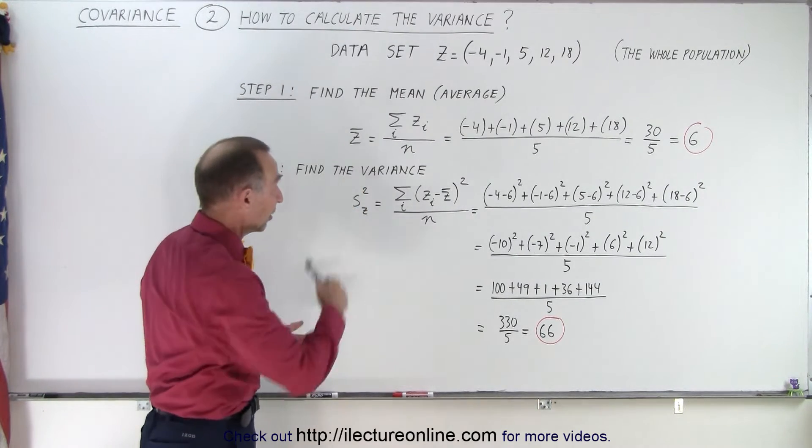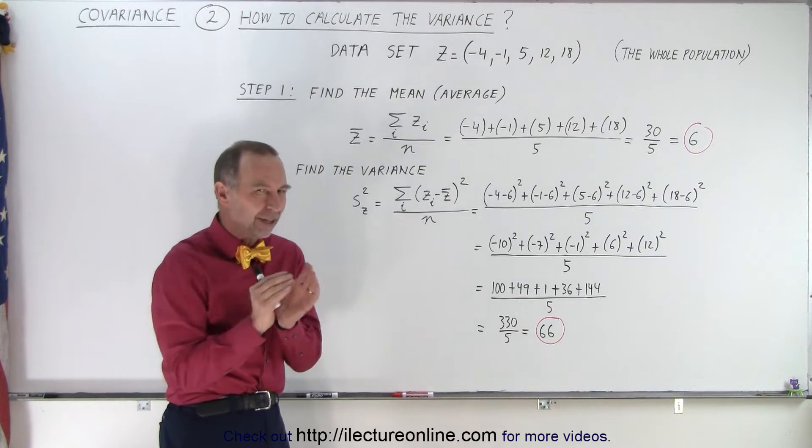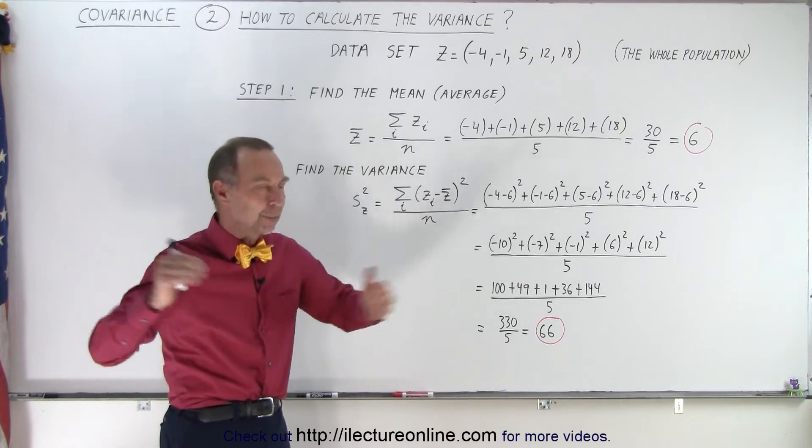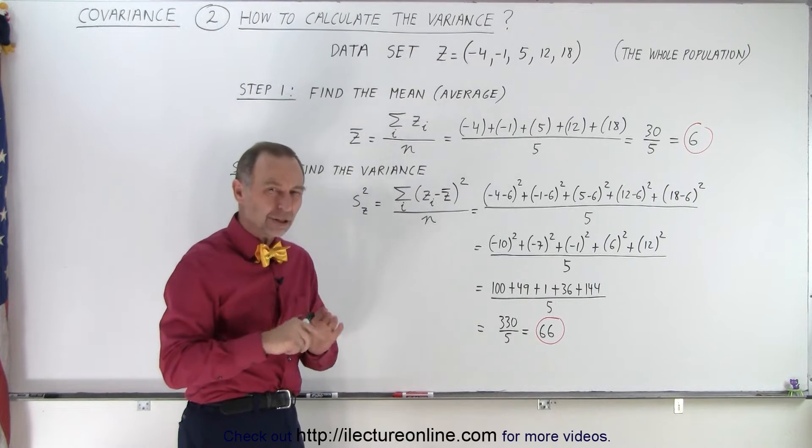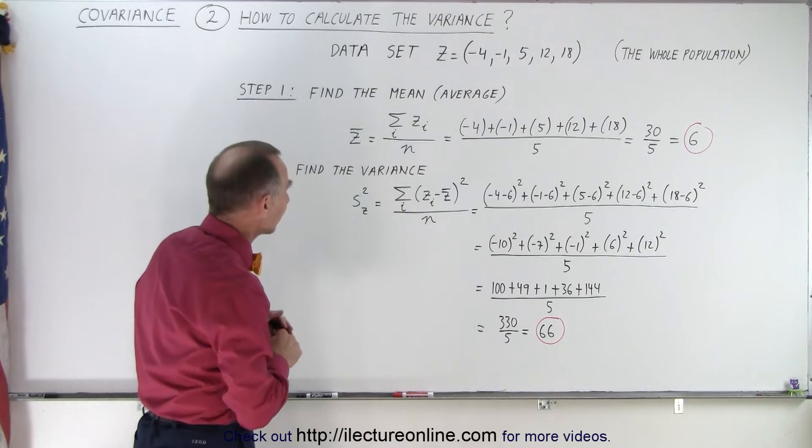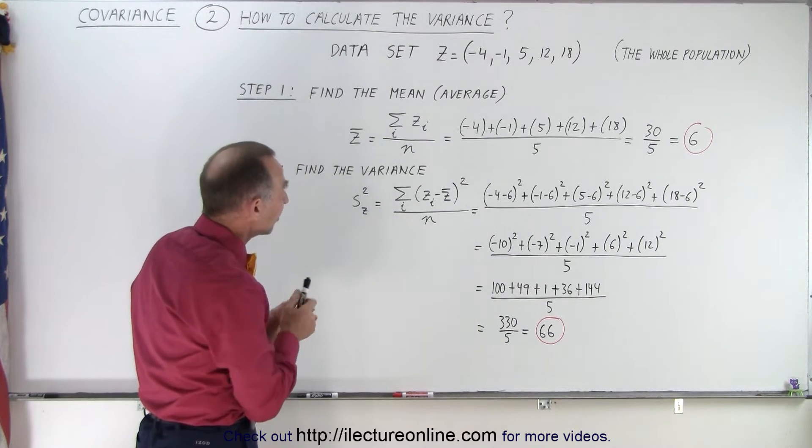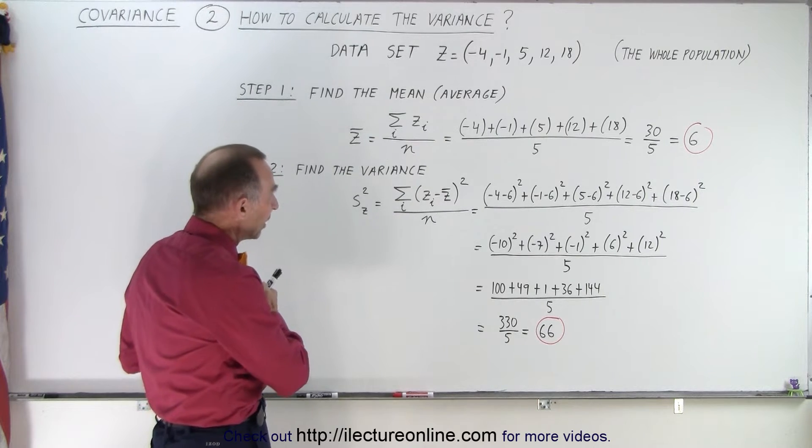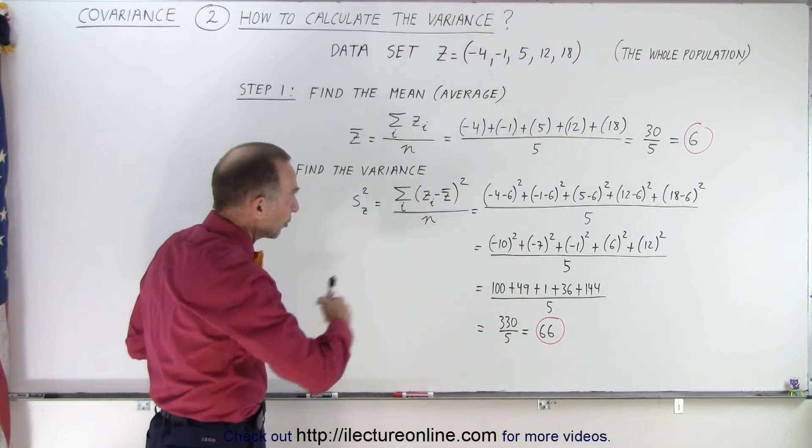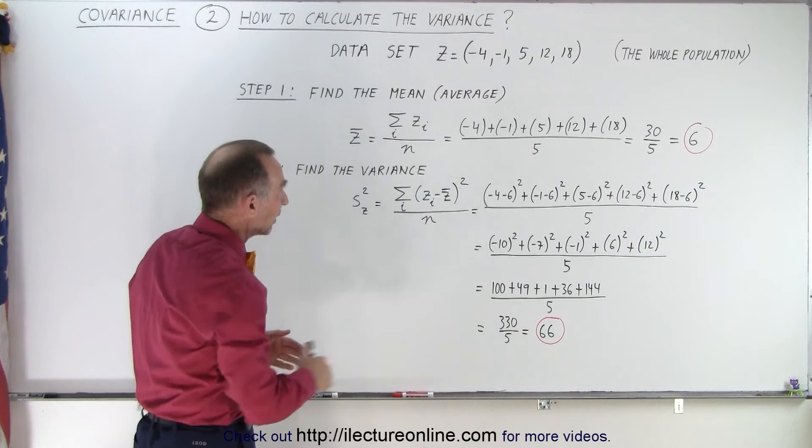Here we have a data set of five numbers, and it's the whole population, not a sample of a larger population. We'll show you in the next video how to handle the difference. Notice that in this data set we start with negative numbers, but it's still increasing. The numbers increase as you go from left to right in the data set.